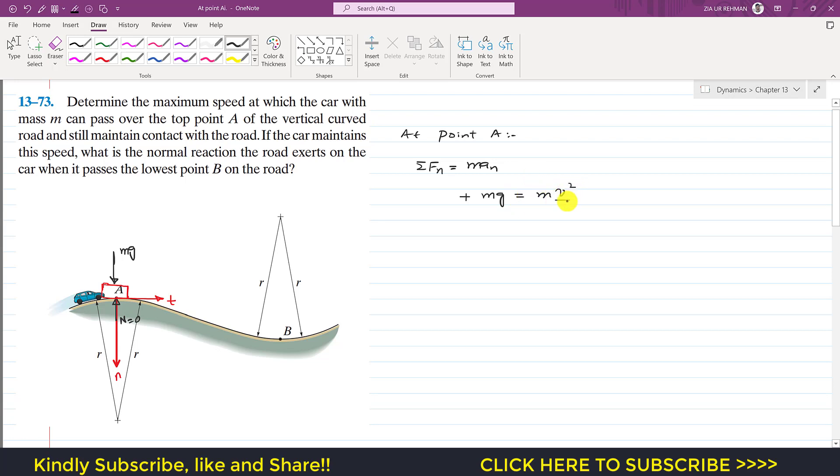So mass will cancel out, and the velocity at point A, from this equation, we can write that v squared will be equal to gr, or we can say that velocity will be equal to square root of gr. So this is that velocity at point A, which was required. And then in the problem further says that if the car maintains this speed, what is the normal reaction the road exerts on the car when it passes the lowest point B on the road?